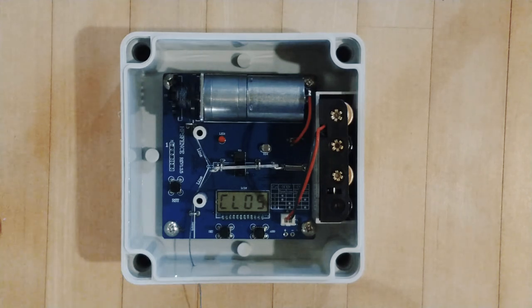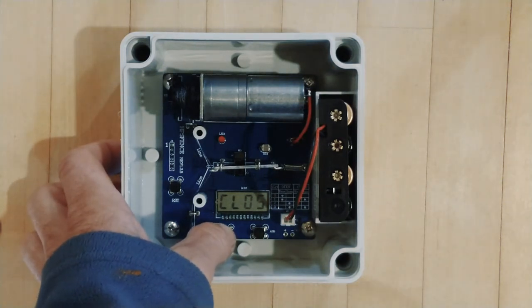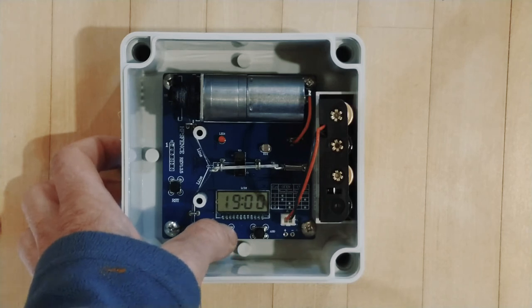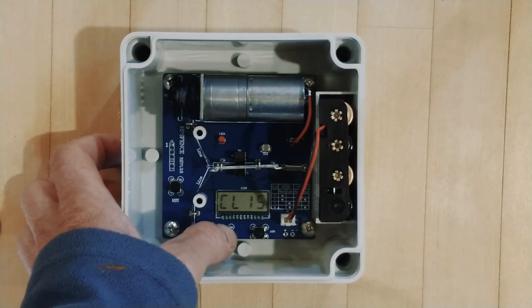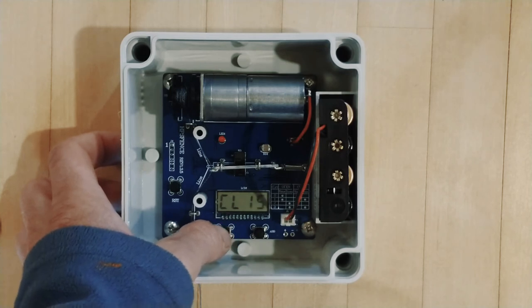Close. This is the close menu. A lot of people think that's CL05, but it's actually CLOS. So this is where we set the closing. 1900 equals seven o'clock. I'm going to leave it there. And then the closed lumens is 15. We can change that. However, it always needs to be lower than the open lumens, which was on the OL menu.